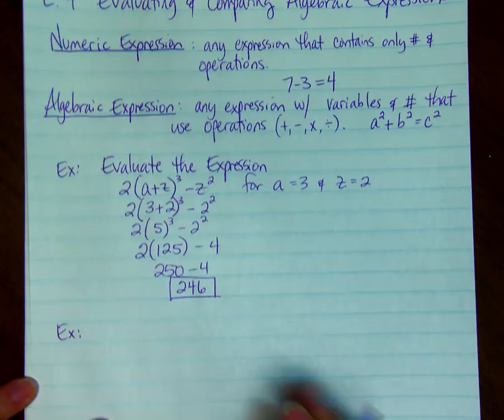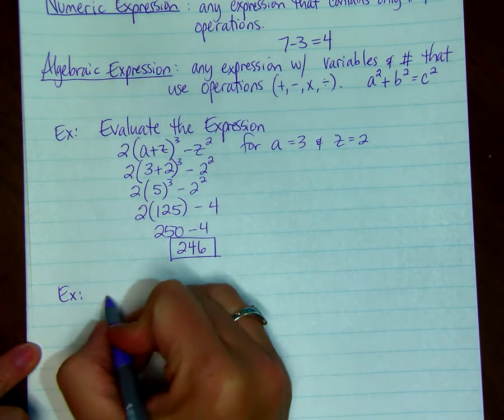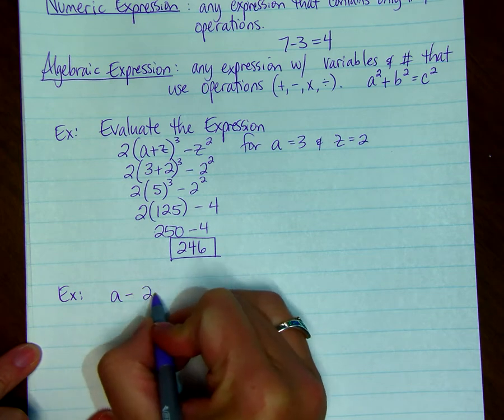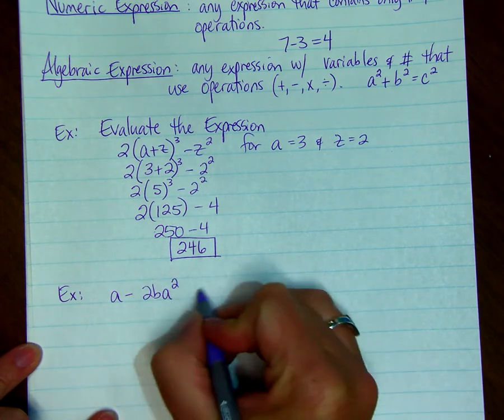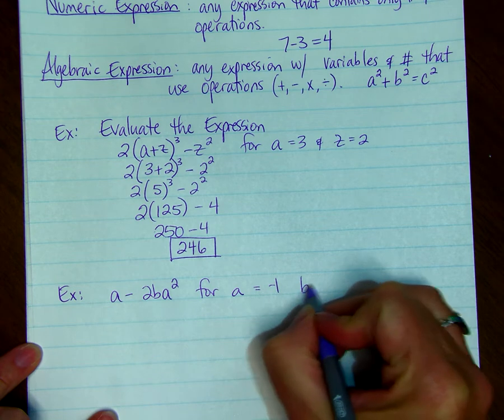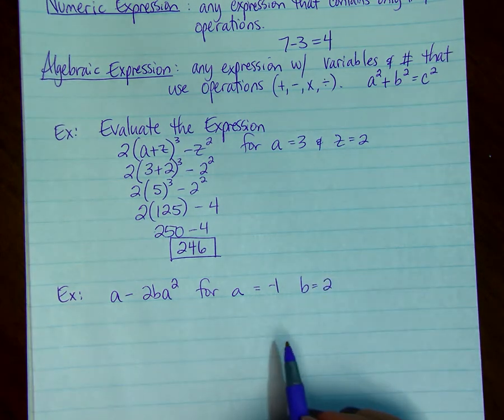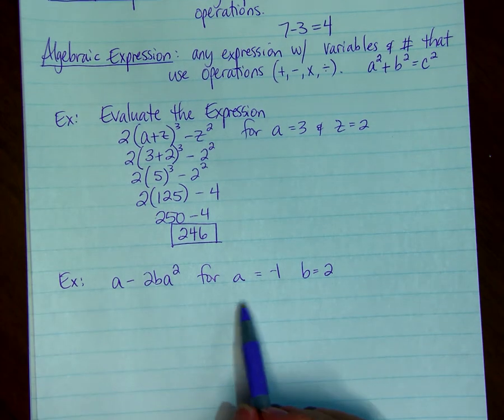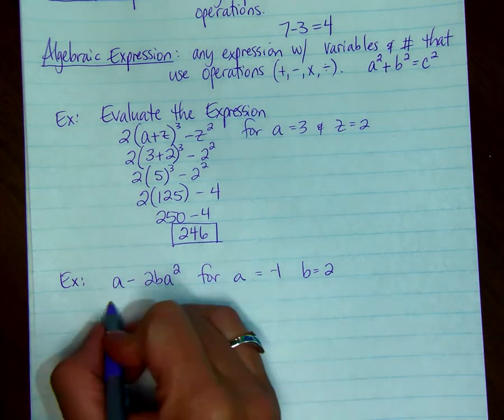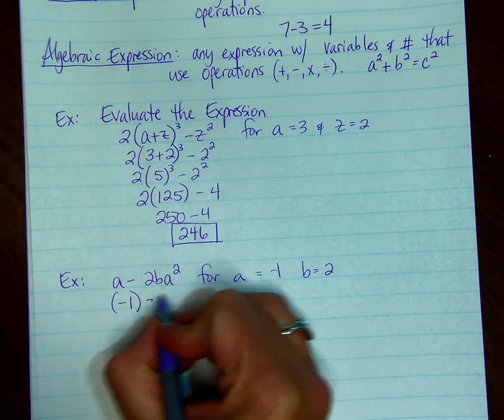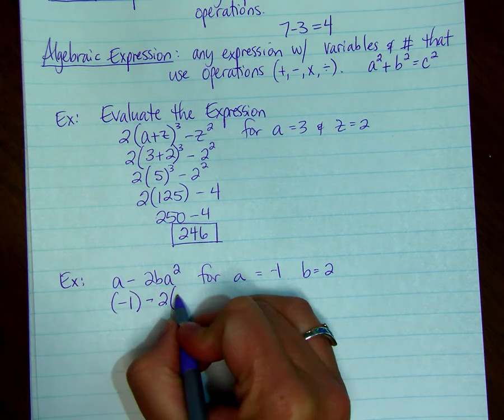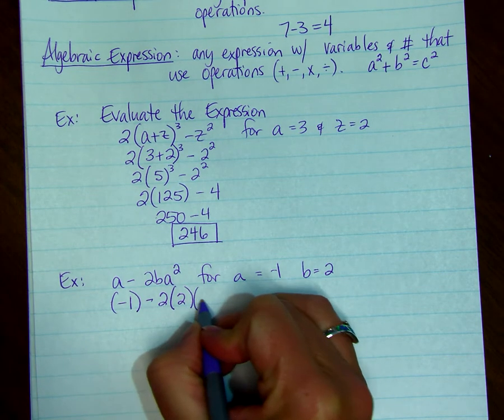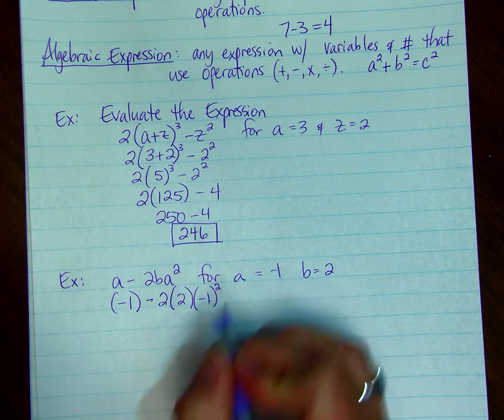One more example where we need to evaluate A minus 2BA squared for A equal to negative 1 and B equal to 2. Because A is negative 1, every time I see an A and I replace it with negative 1, I'm going to put it in parenthesis. So I have negative 1 in parenthesis minus 2. I'm going to put the B in parenthesis and the A in parenthesis, negative 1, and square it.